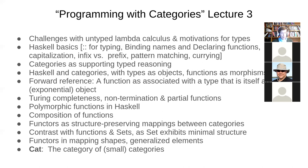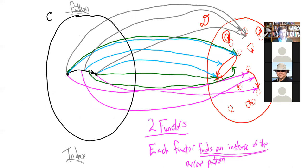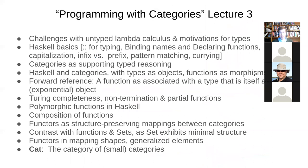We saw last time that functors also map shapes. There's this notion of finding a shape — the 'walking arrow' — in a so-called index category on the left, and finding it over in another category D, finding different instances of it. So we can think of functors as finding an instance of a pattern in another category, or as embedding a version of one category in another.